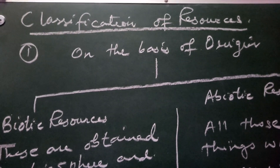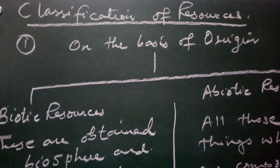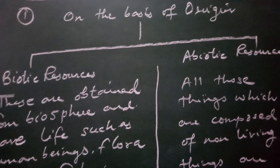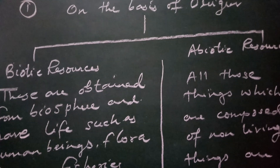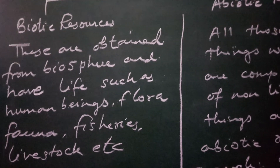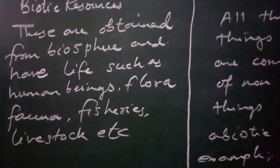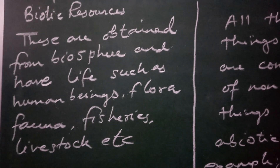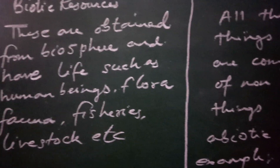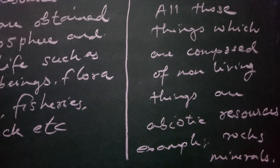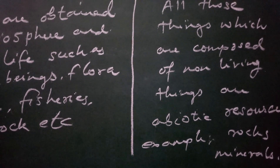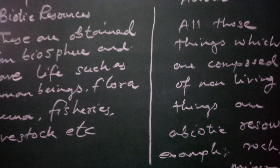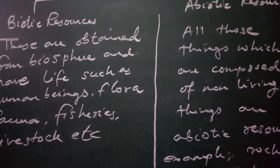Now let us classify resources on different bases. First, we classify resources on the basis of origin. On the basis of origin, resources can be classified as biotic resources and abiotic resources. Bio means life, so those resources obtained from the biosphere that have life — such as human beings, flora, fauna, fisheries, livestock — are biotic resources; these are the living components. Abiotic resources are composed of non-living things, for example rocks and minerals.